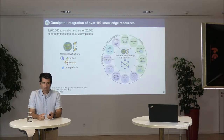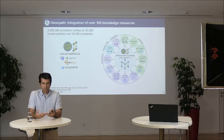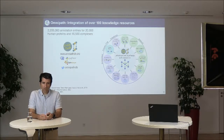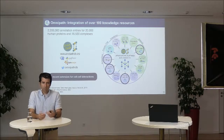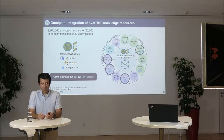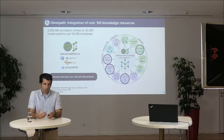We have put together a lot of resources in one single place — a resource called Omnipath, which is a one-stop shop giving access to over 100 different resources. These include pathways, localization information, and — very relevant for single-cell data — different types of information important for studying cell-to-cell interactions. This resource is freely available through Bioconductor, Python, or R.